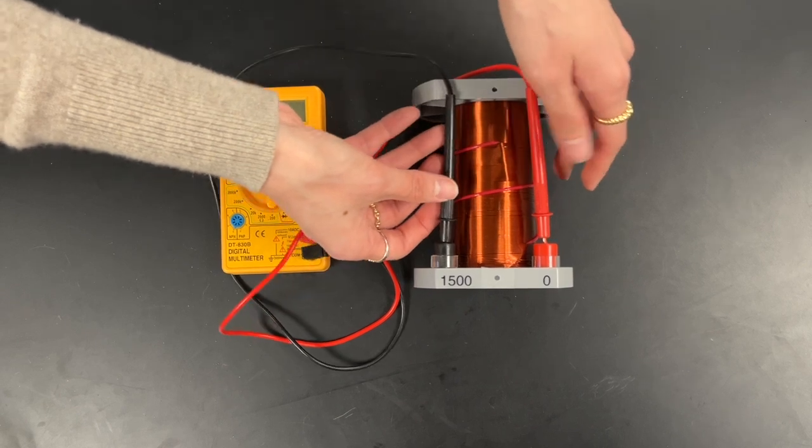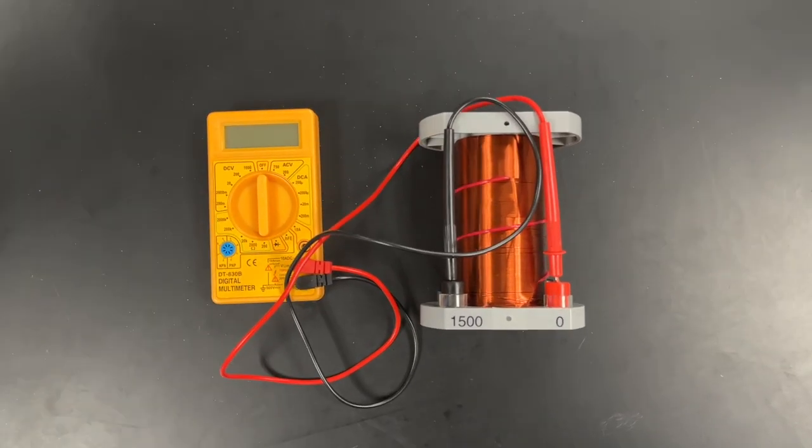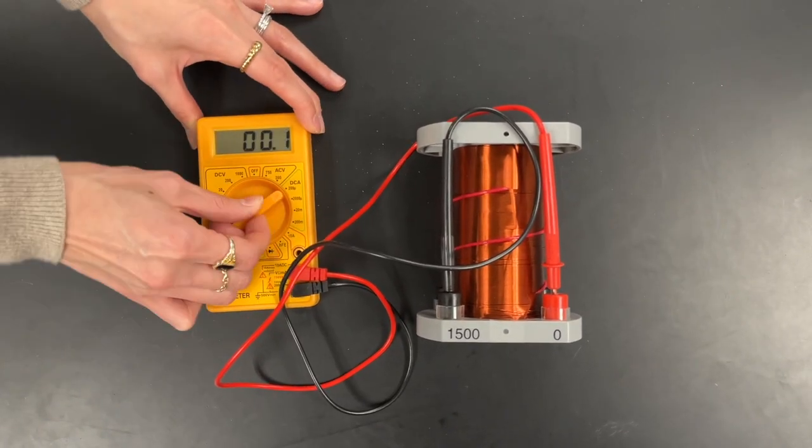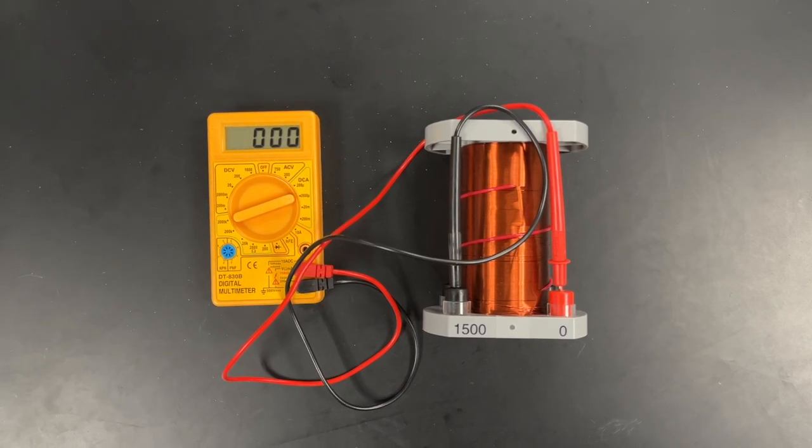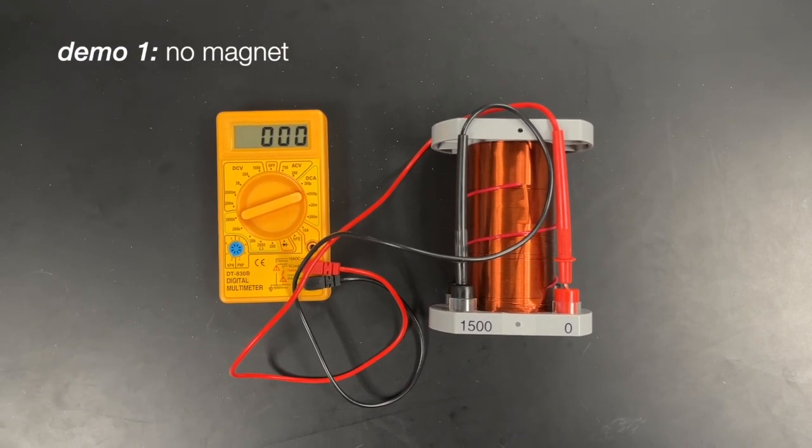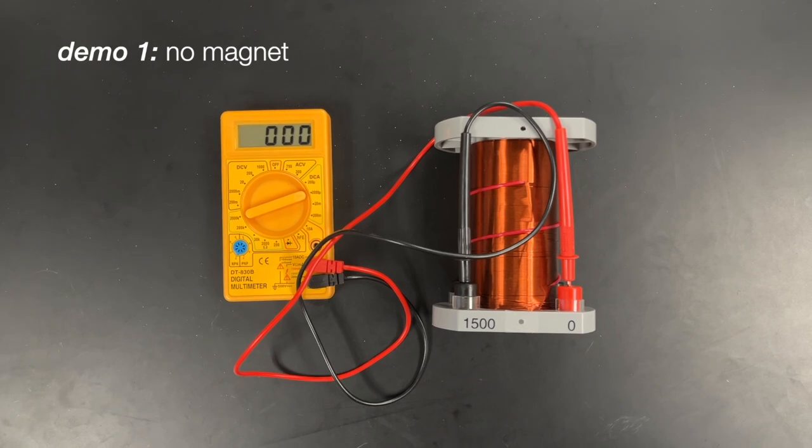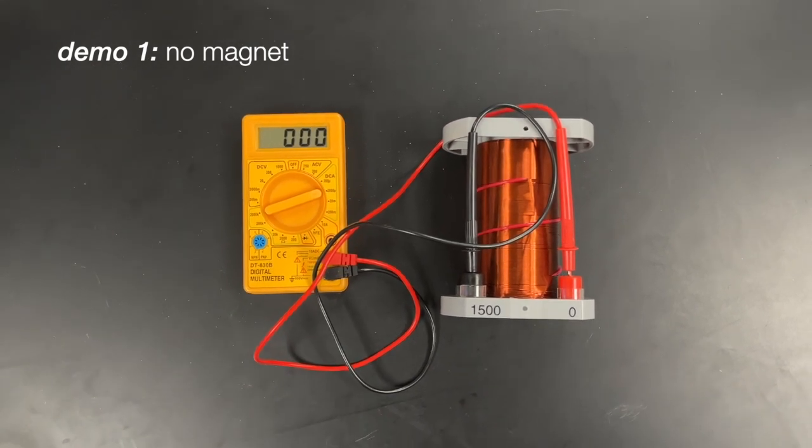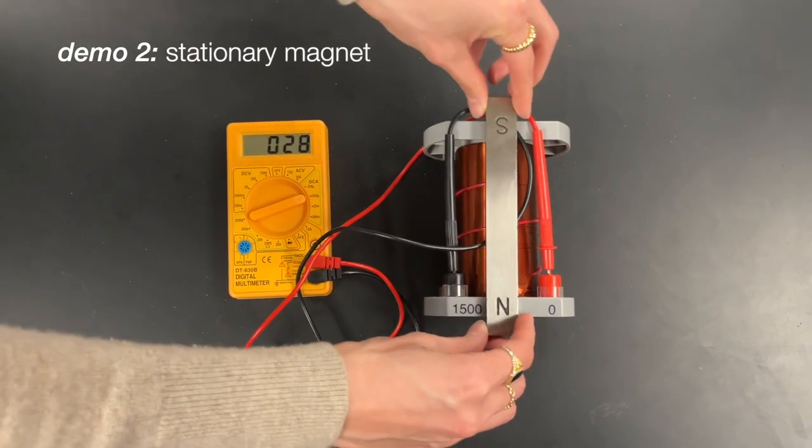I'm just going to make sure that I'm measuring current. As you can see, when there's nothing happening, as expected, there is no current. But what if I place a magnet? First, let's talk about a magnet that's not moving. I'm going to place it right on top. As you can see, there is no current.